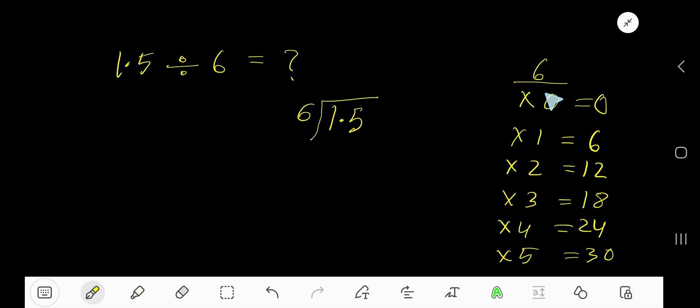To find the multiplication table of 6, just add 6 with the previous step: 0 plus 6 is 6, 6 plus 6 is 12, 12 plus 6 is 18, 18 plus 6 is 24, 24 plus 6 is 30. Now, 6 goes into 1 how many times? 0 times, as 1 is less than 6. 0 times 6 is 0, subtract, we still have 1.